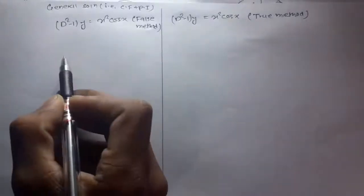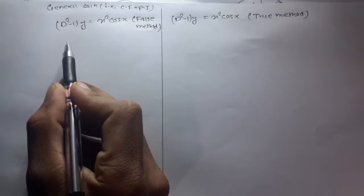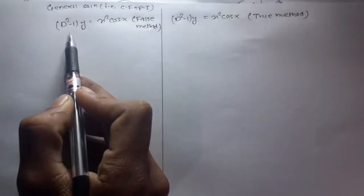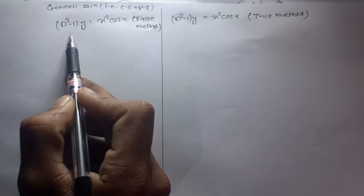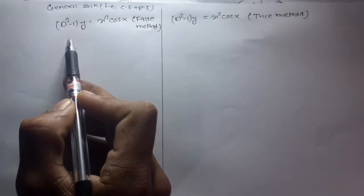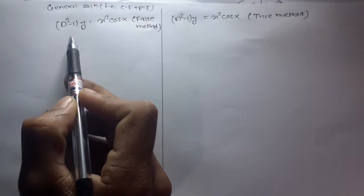I am coming with a confusing math problem. We have to find the general solution of this question: (D² - 1)y = x²cos(x). I'm going to show both methods — the true method and the false method.